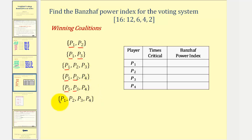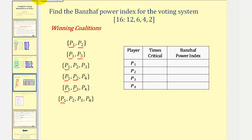For the last winning coalition containing all four players: if player one leaves, we're left with a weight of six plus four plus two, that's twelve — does not meet quota, so player one is critical. If player two leaves, we're left with a weight of twelve plus four plus two, that would be eighteen — does meet quota, player two is not critical. If player three leaves, we're left with a weight of twelve plus six plus two, or twenty — meets quota, player three is not critical. If player four leaves, we have a weight of twelve plus six plus four, which does meet quota — player four is not critical.